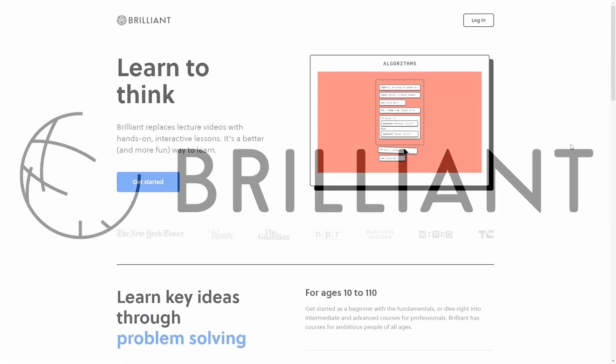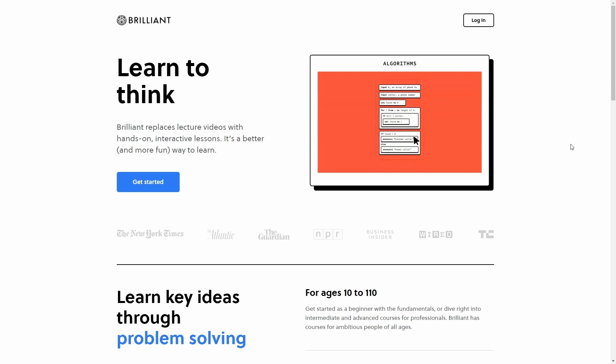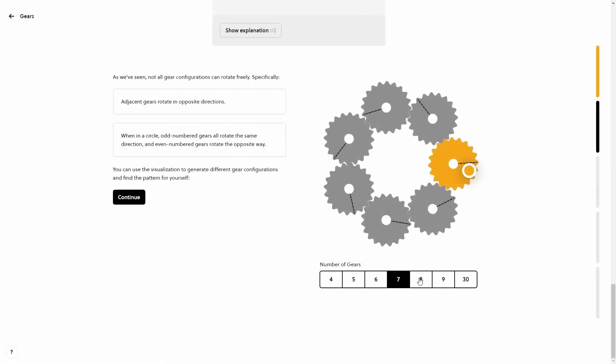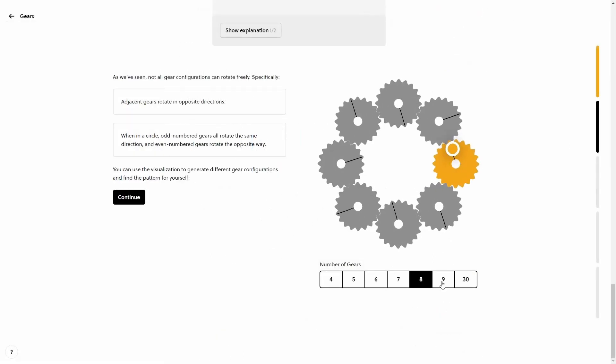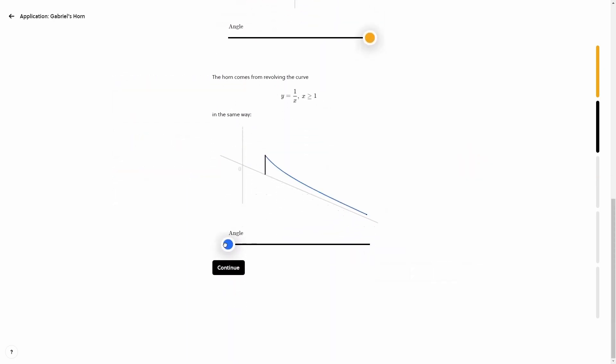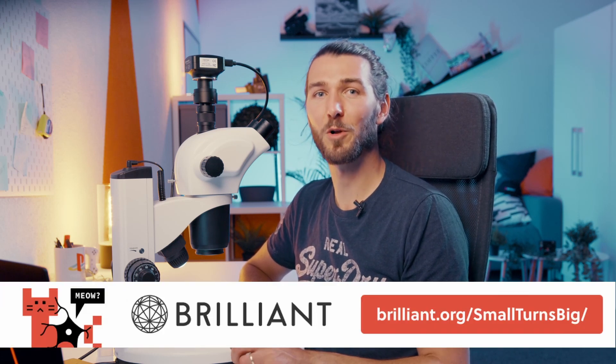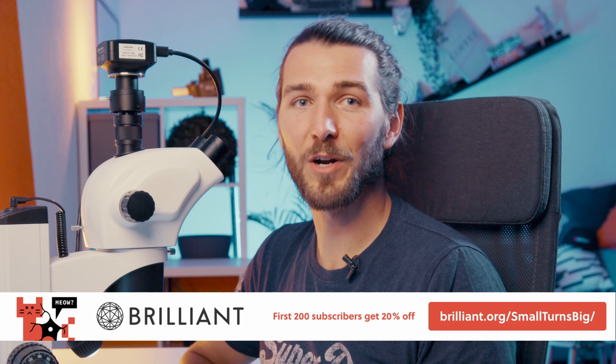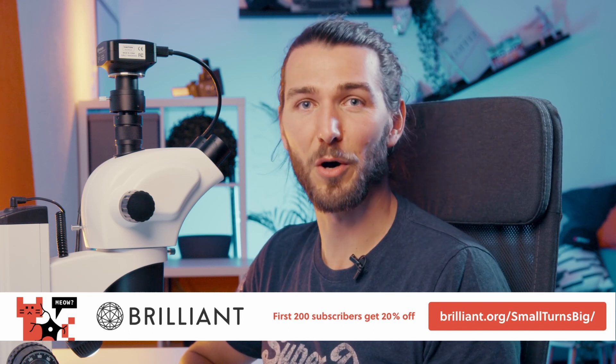If this got you interested in learning STEM topics to make improvements in your life, then I recommend you check out Brilliant to improve your problem solving and critical thinking skills. Their lessons are interactive so that you're applying what you've learned and understanding the why of it instead of just memorizing formulas. To supercharge your learning, go to brilliant.org/smallturnsbig, and the first 200 sign-ups get 20% off the annual premium subscription.